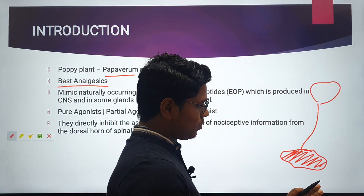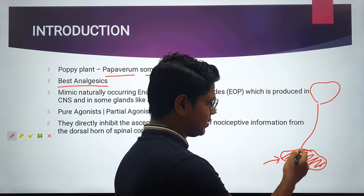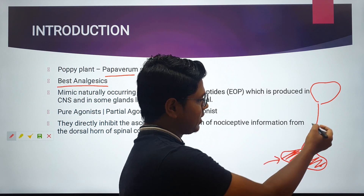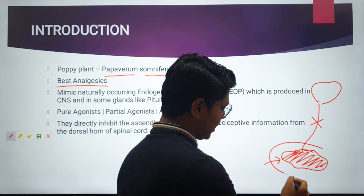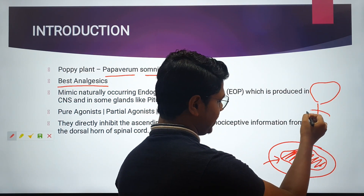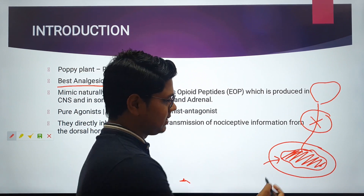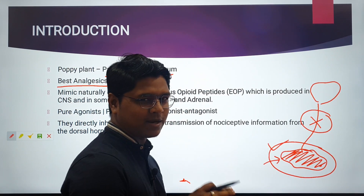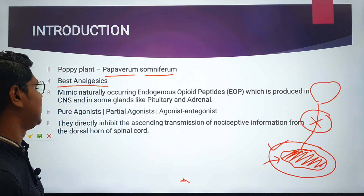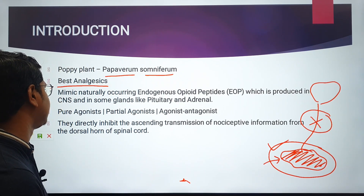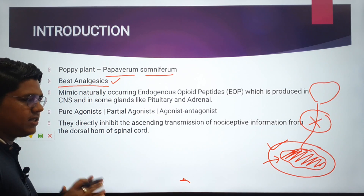Anti-inflammatory drugs work by reducing inflammation, but opioids act by cutting down the neural pathway directly. They are more potent than NSAIDs. The only disadvantage is their duration of action is very short. Till today, opioids are still the best analgesics.